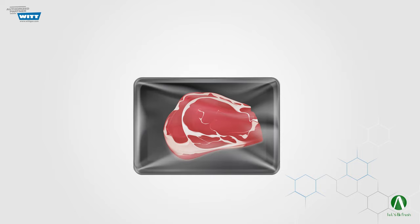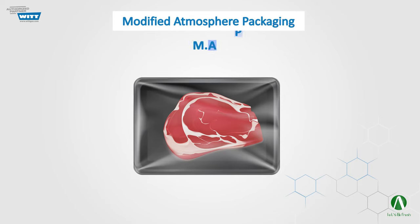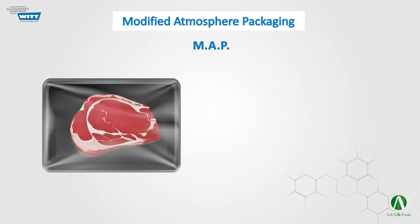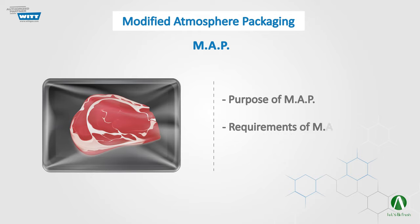In this video, we are going to learn about a modern method of food packaging called modified atmosphere packaging, or simply MAP. First, we will talk about the purpose of this method and then we will take a deeper look at its requirements. Finally, we will consider some examples for further understanding of MAP.